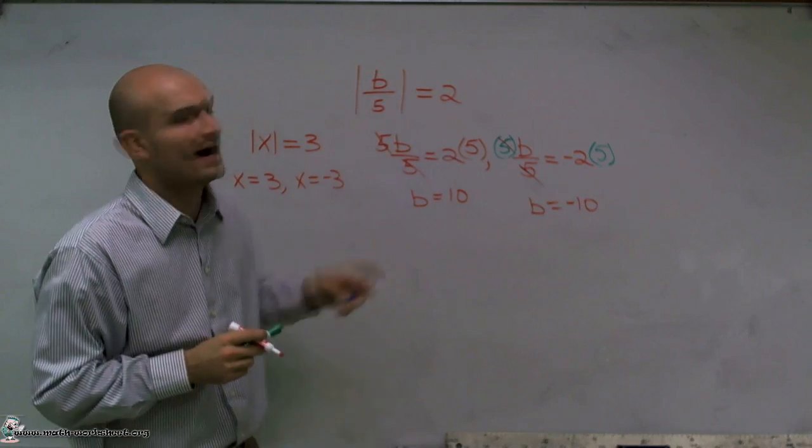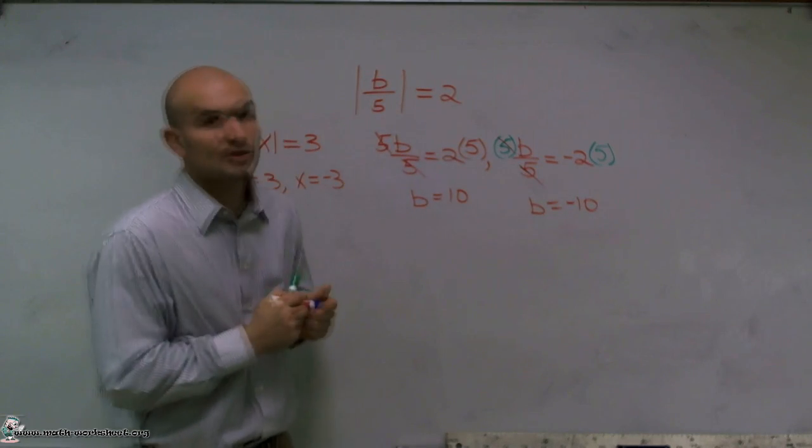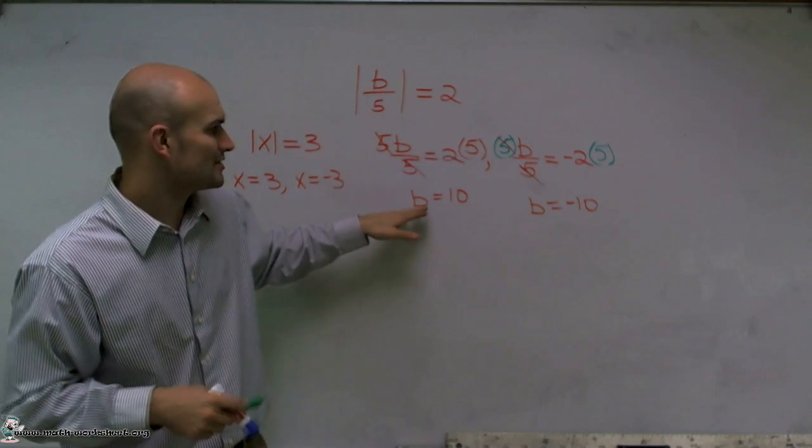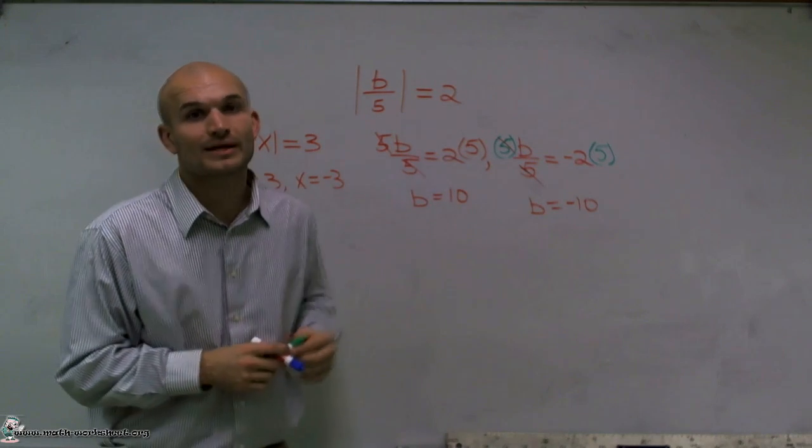Therefore, the absolute value of b divided by 5 equals 2. The value of b for this absolute value equation is either going to be b equals 10 or b equals negative 10.